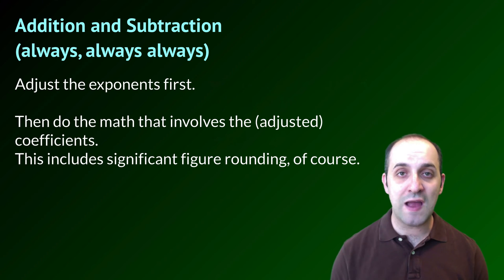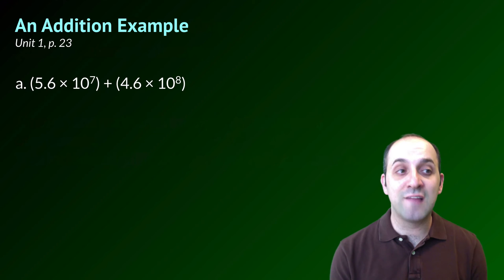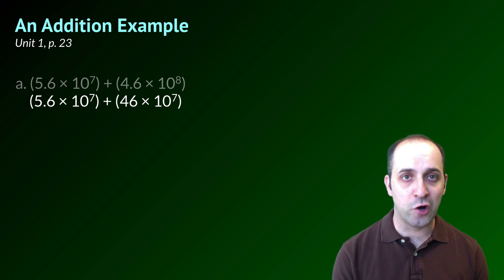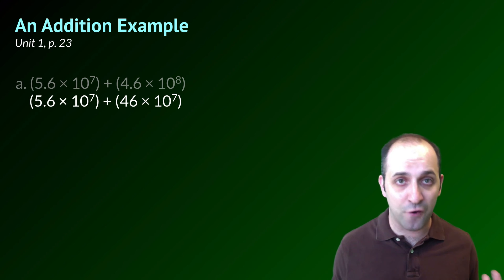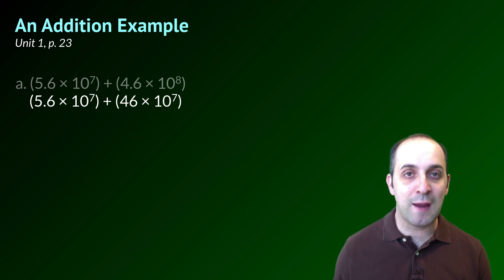When we do addition and subtraction, we're going to work slightly differently. We're actually going to adjust the exponents first, and then we're going to do the math that involves the adjusted coefficients. Then we'll figure out our significant figure rounding as needed. Let's look at this example from page 23 in our unit packet. We're going to add 5.6 times 10 to the 7 with 4.6 times 10 to the 8th. The first thing that we need to do is adjust one of our terms so that we have a common exponent in base 10. What I chose to do was to adjust my second term. I could have just as easily adjusted my first one. It really doesn't matter, as long as we wind up with two of the same powers of 10.